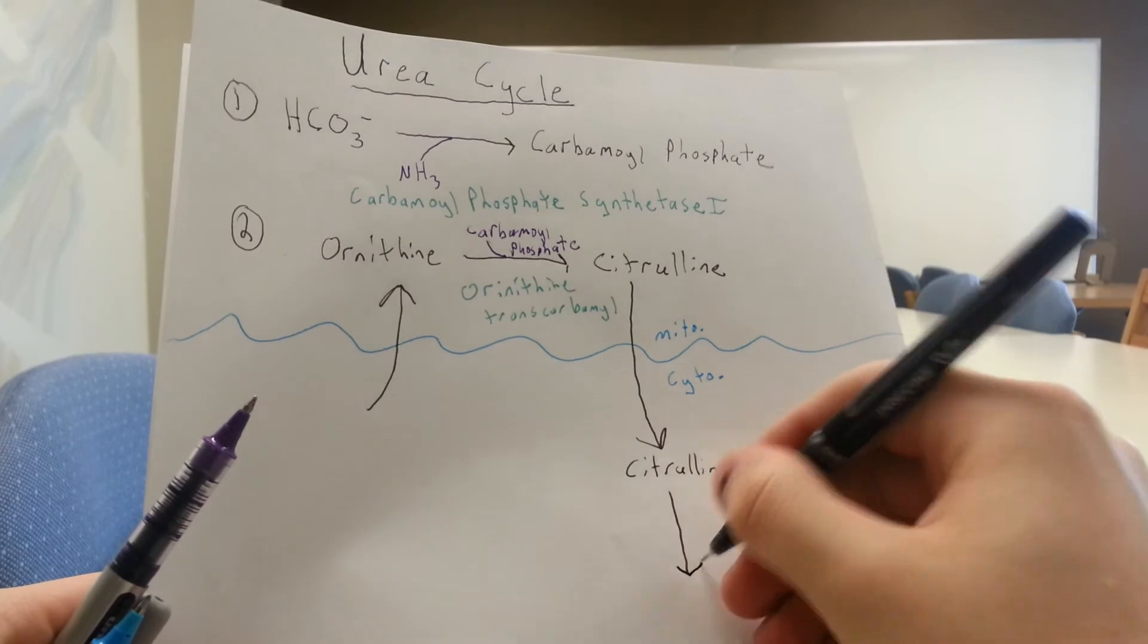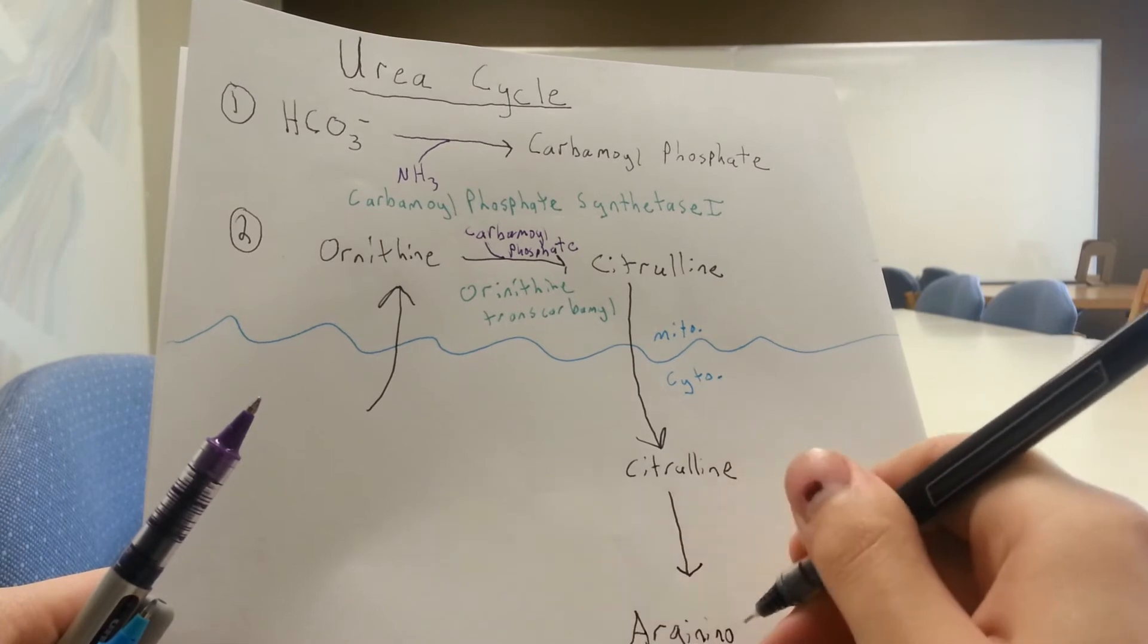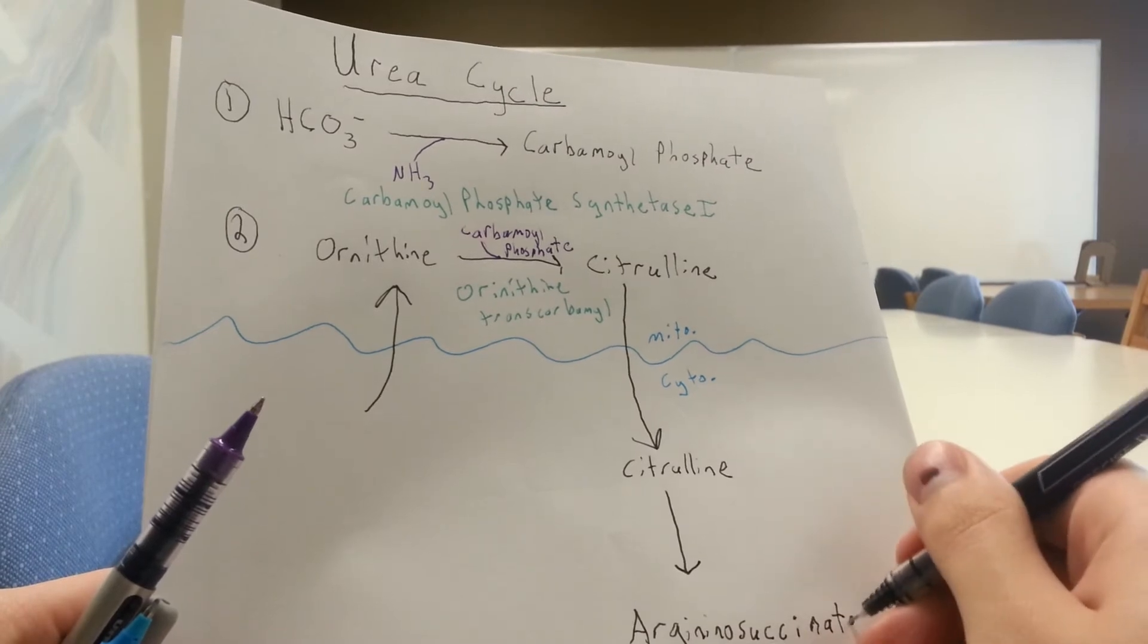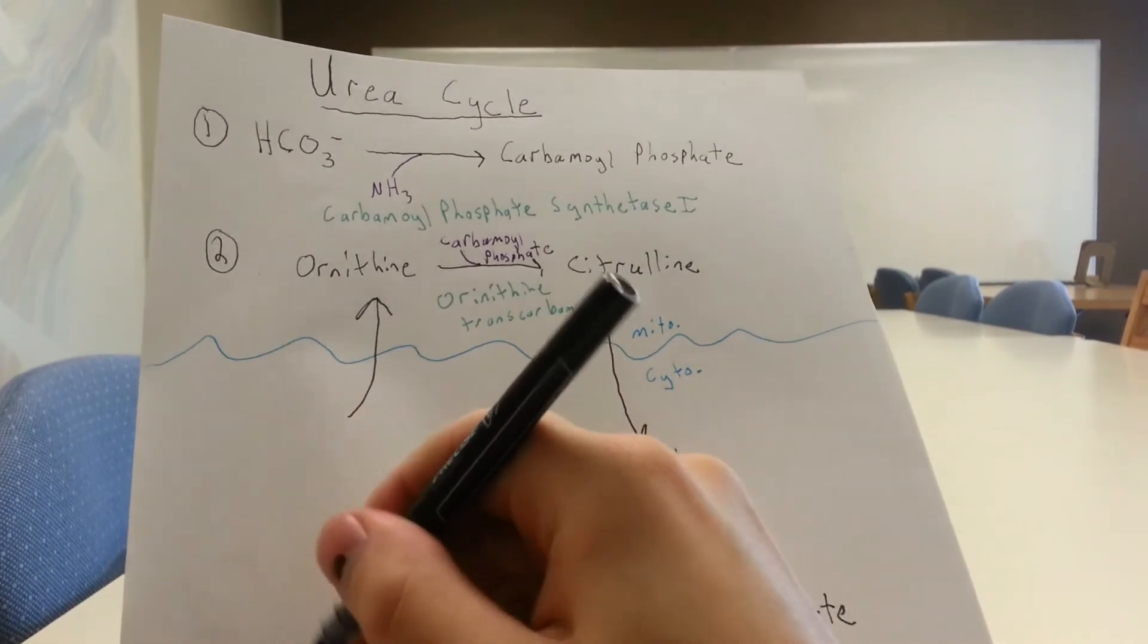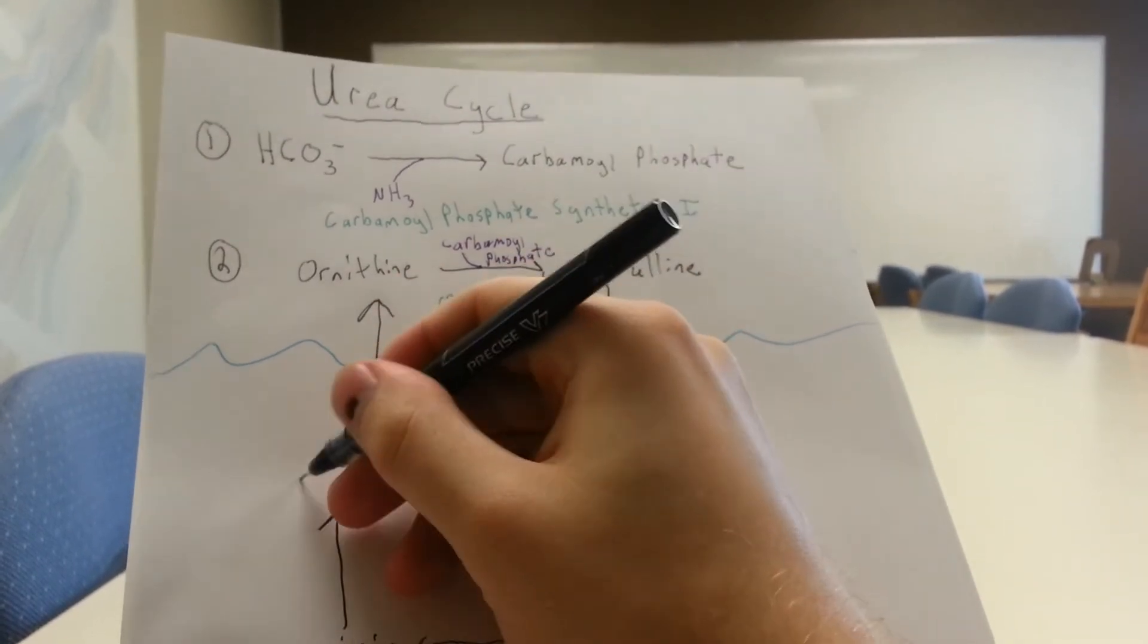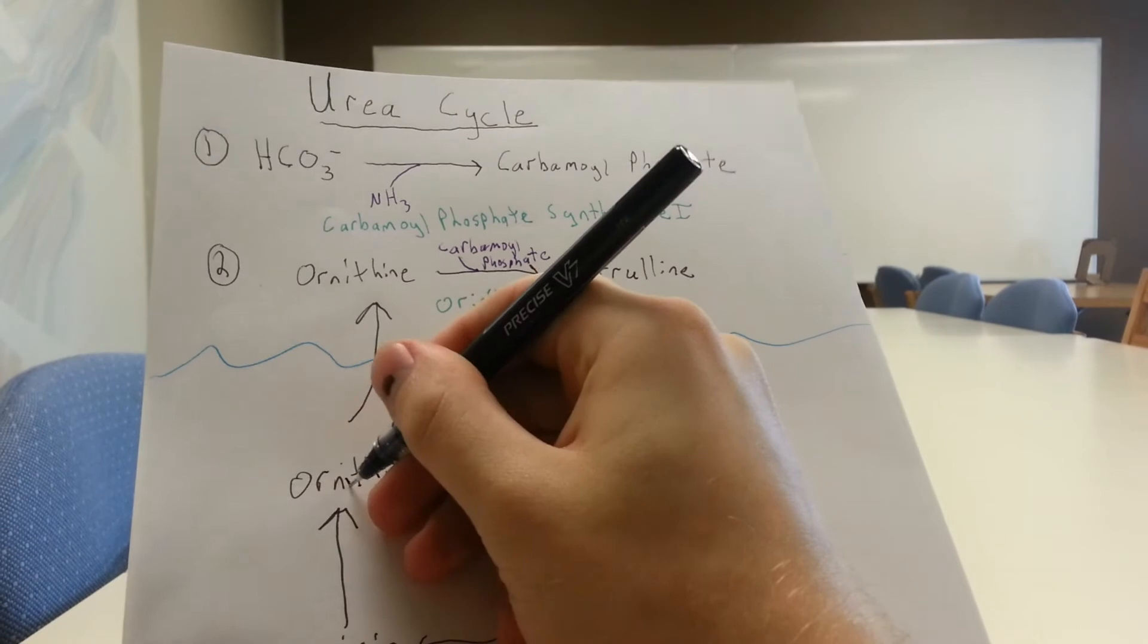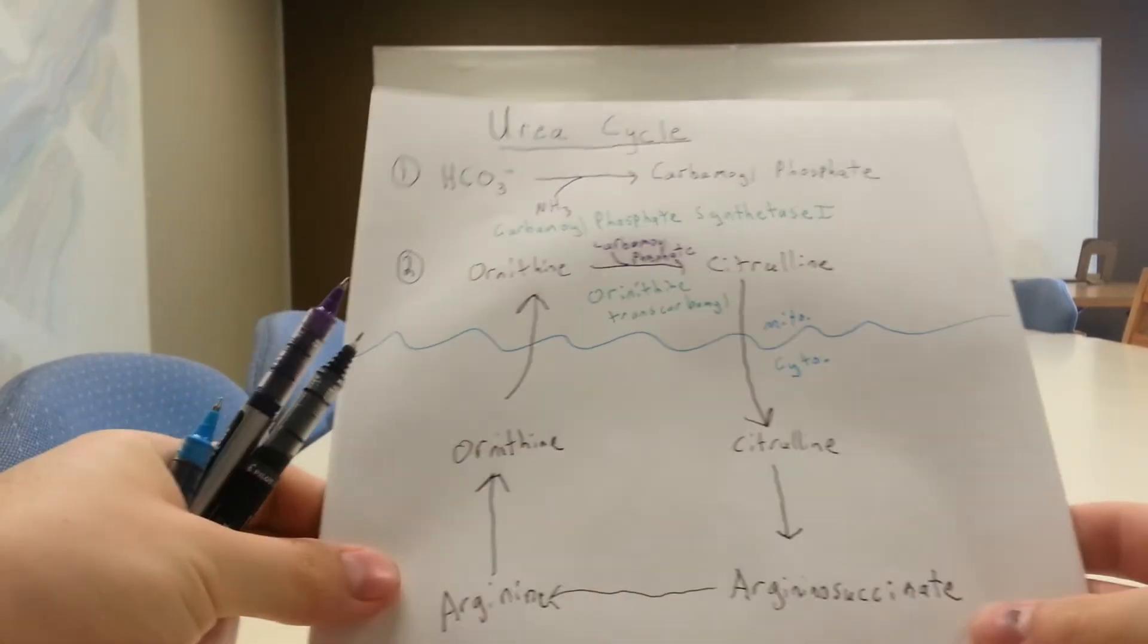So citrulline goes to argininosuccinate. And then argininosuccinate goes to arginine, over this way. And finally, we go back, and arginine goes to ornithine. And then that gets pumped across, back into the mitochondria, to be sort of re-carbamylated, as it were, to citrulline, and the whole cycle goes again. And I'll get this better in frame there so you can see it.